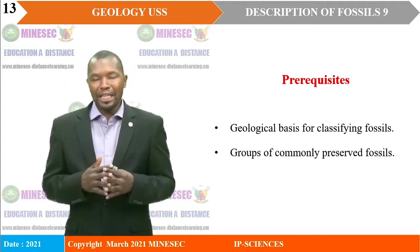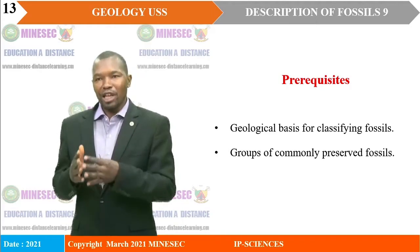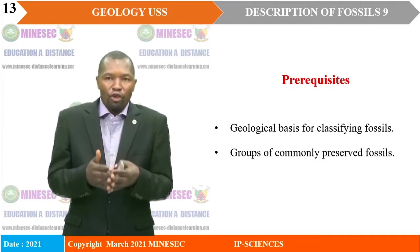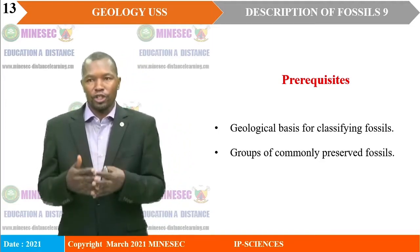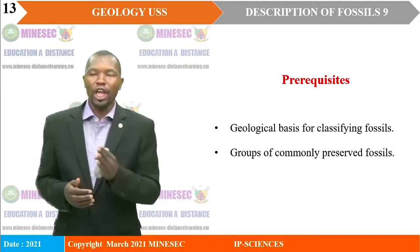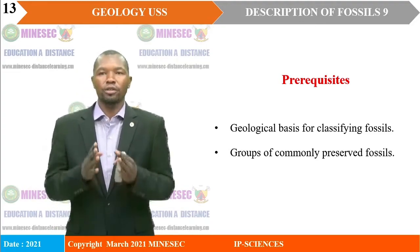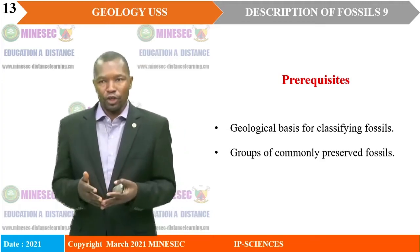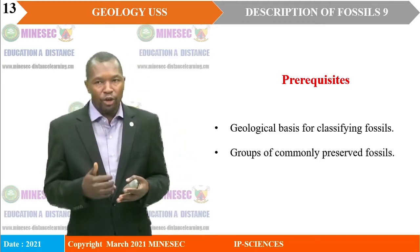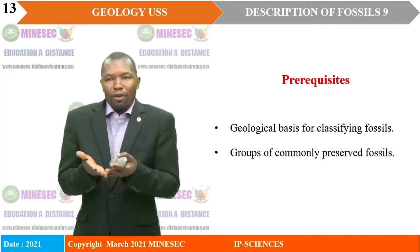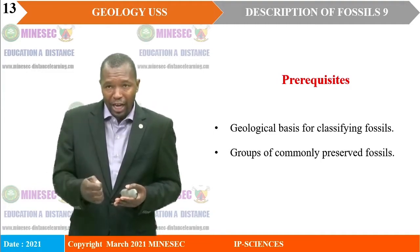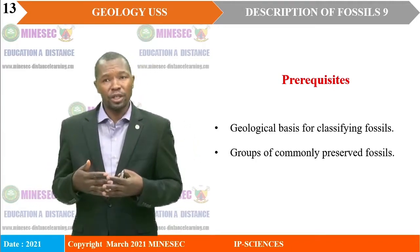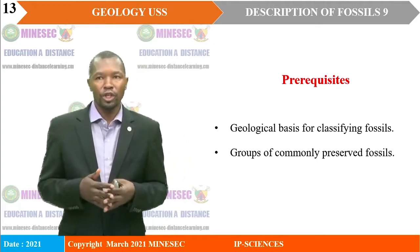To understand the differences and similarities of regular and irregular echinoids, it is important to have information on the geological basis for classification of fossils — that is, the morphological and ecological aspects, which are very essential for today's lesson. We have also seen groups of commonly preserved fossils. The phylum Echinodermata is one of them and is our focus today. Knowledge of different characteristics is very important, without which it would be difficult to differentiate and give similarities of the two echinoid groups.